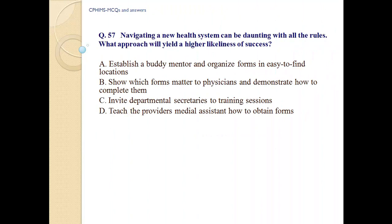Question number 57: Navigating a new health system can be daunting with all the roles. What approach will ensure the highest likelihood of success? A. Establish a buddy mentor and organize forms in easy-to-find locations. B. Show which forms matter to physicians and demonstrate how to complete them. C. Invite departmental secretaries to training sessions. D. Teach providers' medical assistants how to obtain forms.